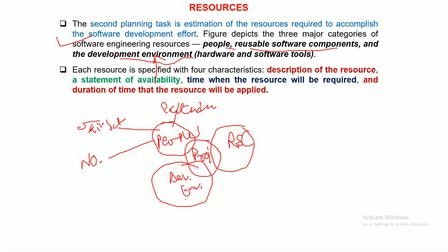The development environment talks about various software and hardware tools you require. Since you are going to develop an application software for a particular client, you definitely need some kind of environment that provides support for your development work. The type of systems, networks, software tools, and hardware needed for proper development — all of it needs to be identified and planned in advance.